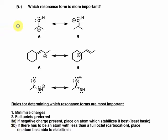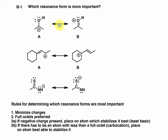Let's look at the first example comparing A and B, and go down this list to determine which resonance form is most important. Starting with minimization of charge: do we notice any differences in charge between A and B? Well, A has a positive charge and B has a positive charge, so there's no difference — we can't use this as a criterion to determine which is more important.